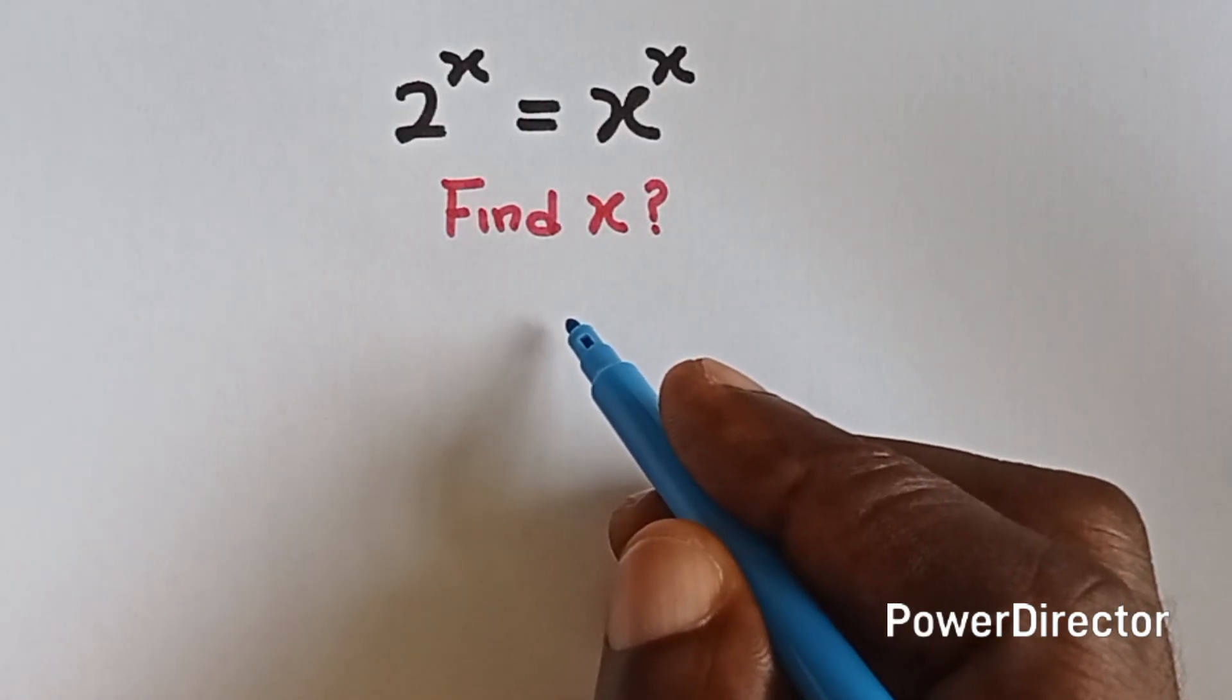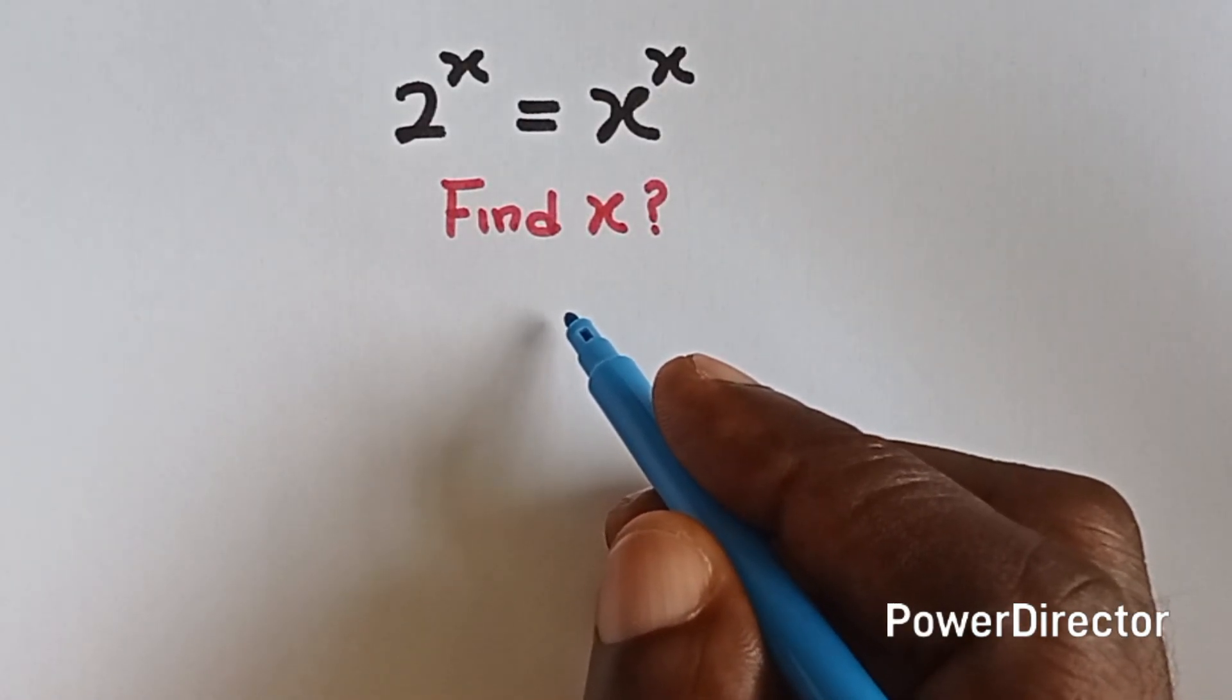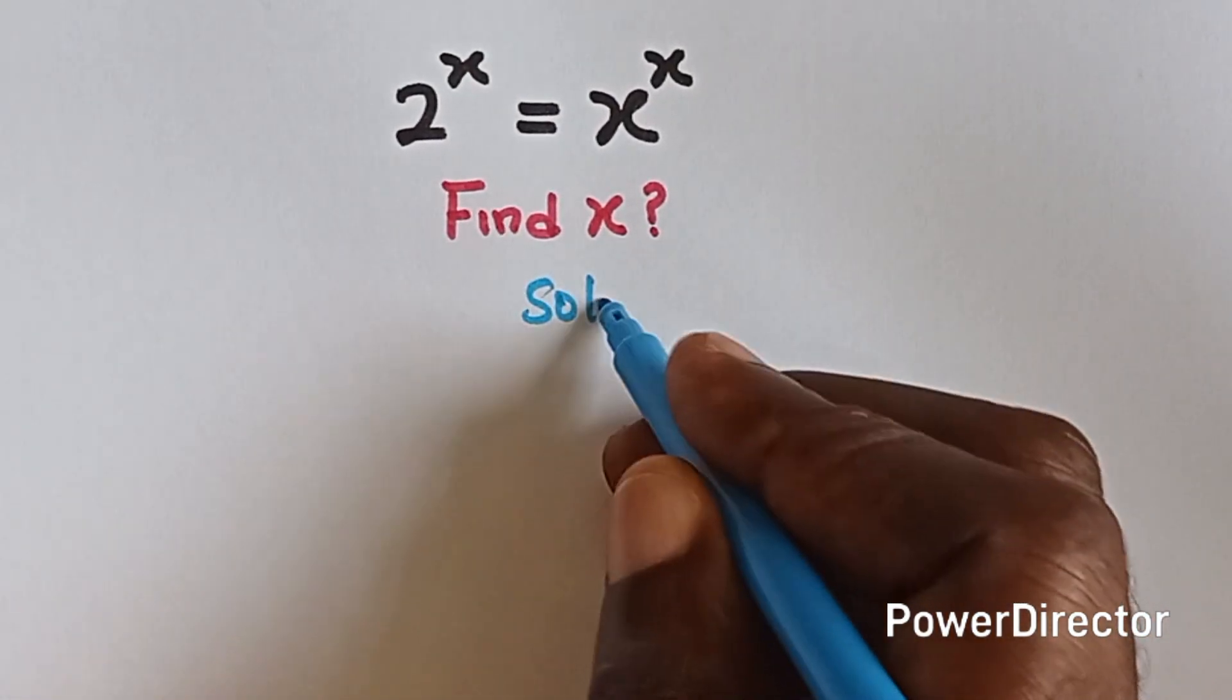Hi guys, welcome back to my channel. Now let's solve this viral equation together. We have 2 raised to power x equals to x raised to power x. All right, solution.